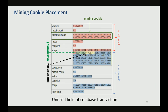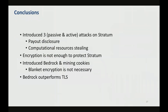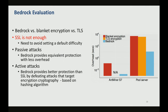The final requirement is that we propose minimum modifications to the Stratum protocol. We are essentially proposing using an unused field in the Bitcoin block, but any other unused field can be used as well. In our evaluation, we compare Bedrock to SSL, TLS, or blanket encryption. As far as passive attacks, Bedrock actually provides equivalent protection with a lot less overhead — a couple of orders of magnitude better in performance as shown in this graph.